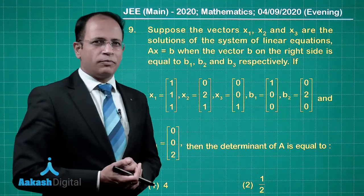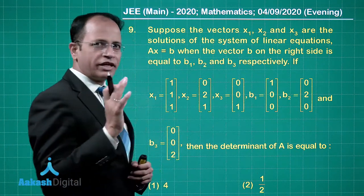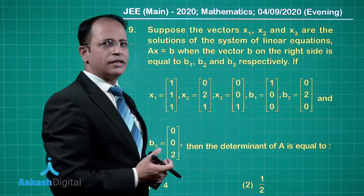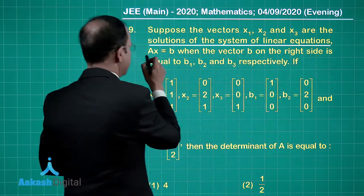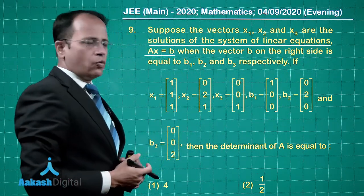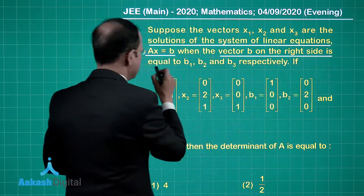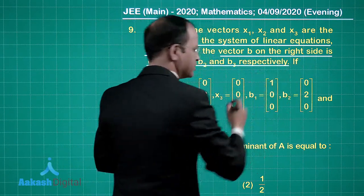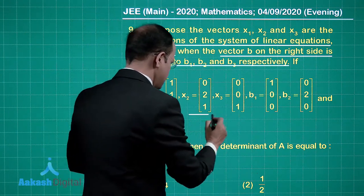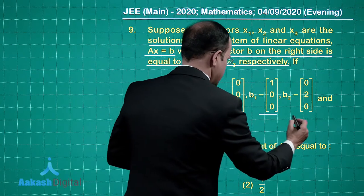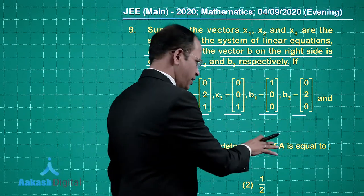Now let us talk about question number 9. The problem states: suppose vectors x1, x2, x3 are the solutions of the system of linear equations Ax = b, when the vector b on the right side equals b1, b2, b3 respectively. The values of x1, x2, x3, b1, b2, b3 are given, and we have to find the determinant of matrix A.